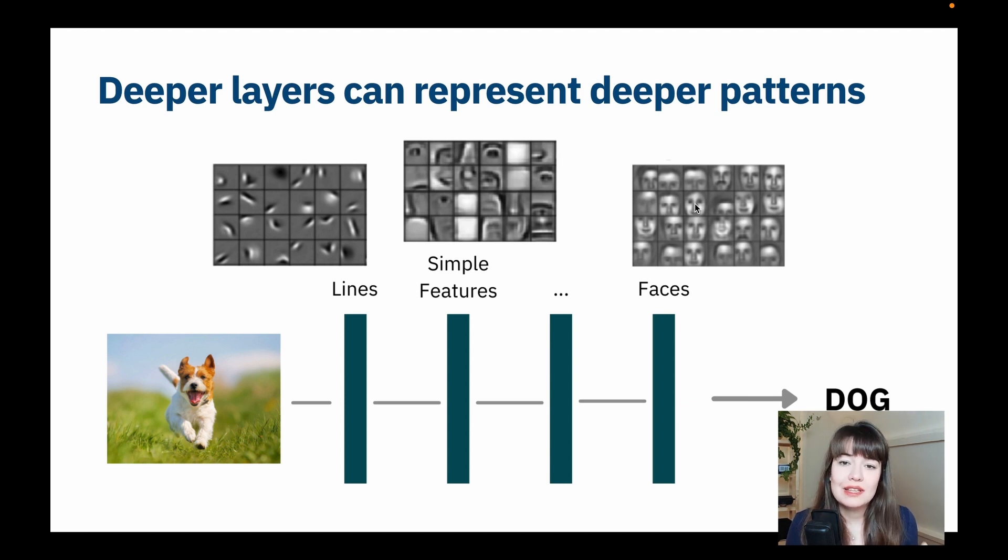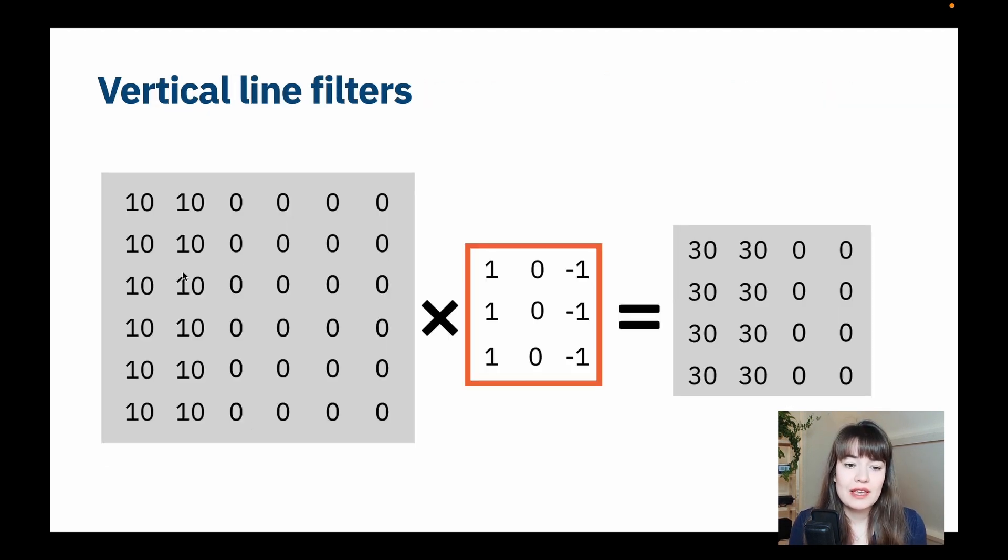But how does that really, what does that look like when you, let's say, a vertical line filter? What does it look like? So in this image, let's say we have a line here, right? So these are high or brighter values, and these are darker values of zeros. So that would mean, let's say this is just a small part of an image. That means that there is a line here because we are going from bright colors to dark colors.